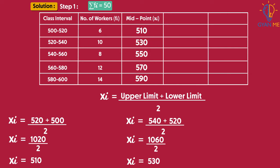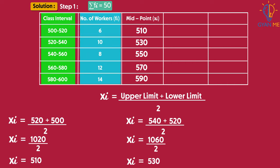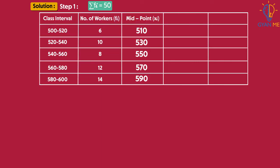Now the table has three columns: class interval, that is, classes; number of workers, which is the frequency corresponding to each class; and midpoint xi of each class.